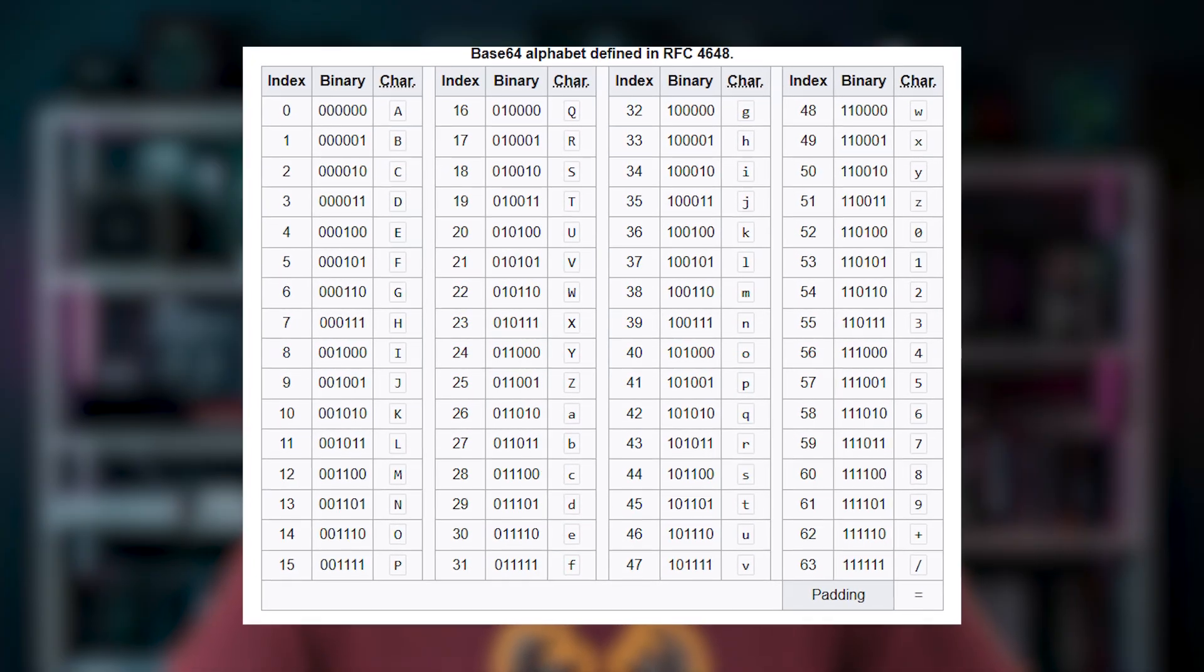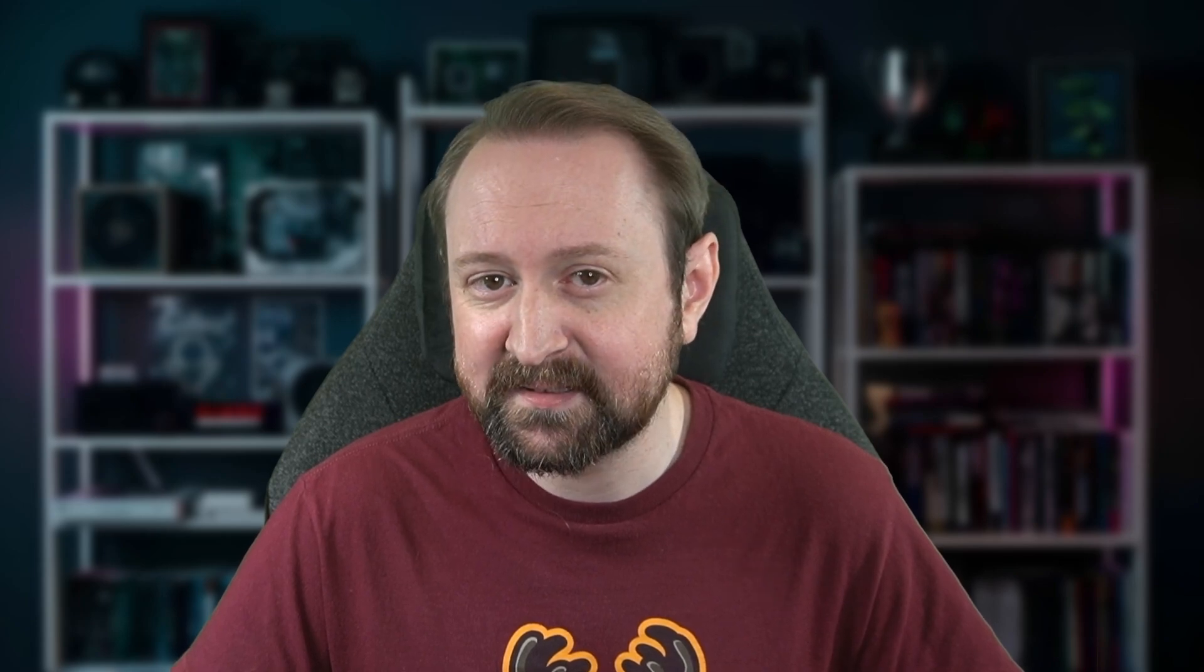You might be wondering, why 64? Well, Base64 uses 64 different characters to represent data. That's important because 64 is a power of 2, specifically 2 to the 6, which means each Base64 character represents exactly 6 bits of data. This makes it easy to convert between binary data, which is made up of 8-bit bytes, and the encoded text. 3 bytes, 24 bits, can be split neatly into 4 6-bit chunks.